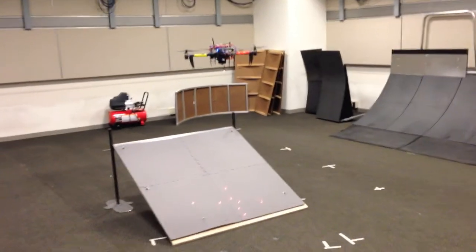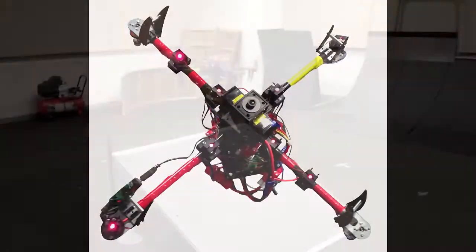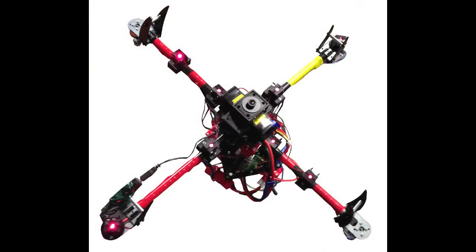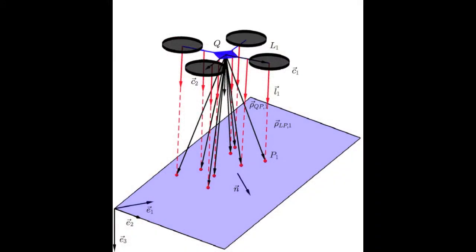To aid in landing a UAV on an inclined surface autonomously, we propose a new approach utilizing several inexpensive laser modules along with a single onboard camera to estimate the altitude and ground plane orientation during flight.